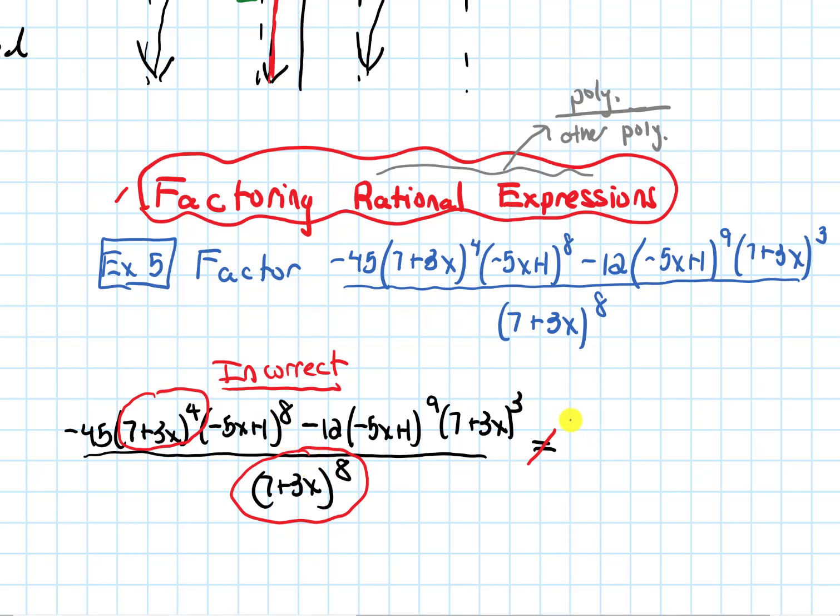And if I cancel them I would get a -45 still. The 7+3x would be gone on the top, all four of them. And then I would still have a -5x+1 to the 8 minus the -12 and all that stuff with it. And on the bottom now I would just have 7+3x. Because four of these canceled I would just have this to the 4. So it turns out I can't do this but I want to talk about why.